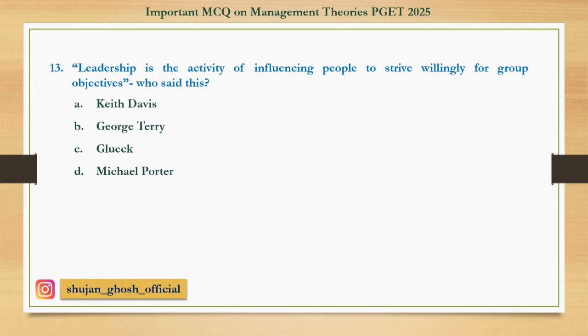Question number 13: 'Leadership is the activity of influencing people to strive willingly for group objectives.' Who said this? Option A: Kite Davis. B: George Terry. C: Gleick. D: Michael Porter. Answer is George Terry.